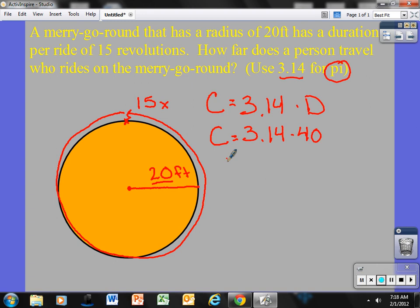Now, I'm going to use a calculator here to figure out the circumference. So, the circumference, or one revolution around the circle, is 3.14, or pi, times 40. That's going to be equal to 125.6 feet, because we're using feet in this problem.